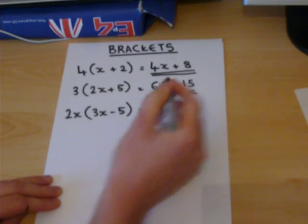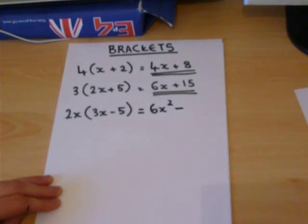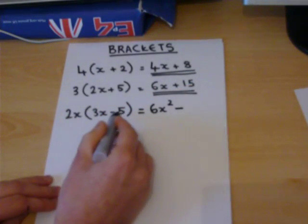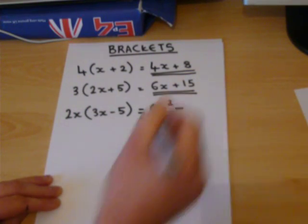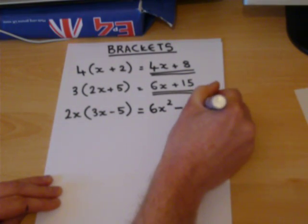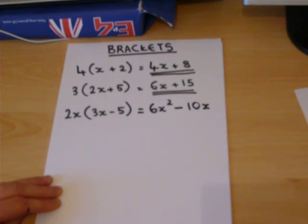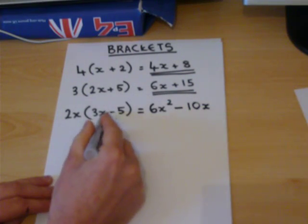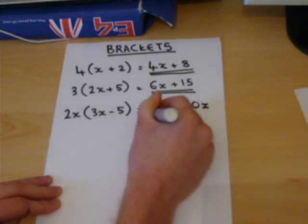We now have a minus. And 2x times 5, which is 5 lots of 2x, is 10x, with the minus sign due to the subtraction within the bracket.